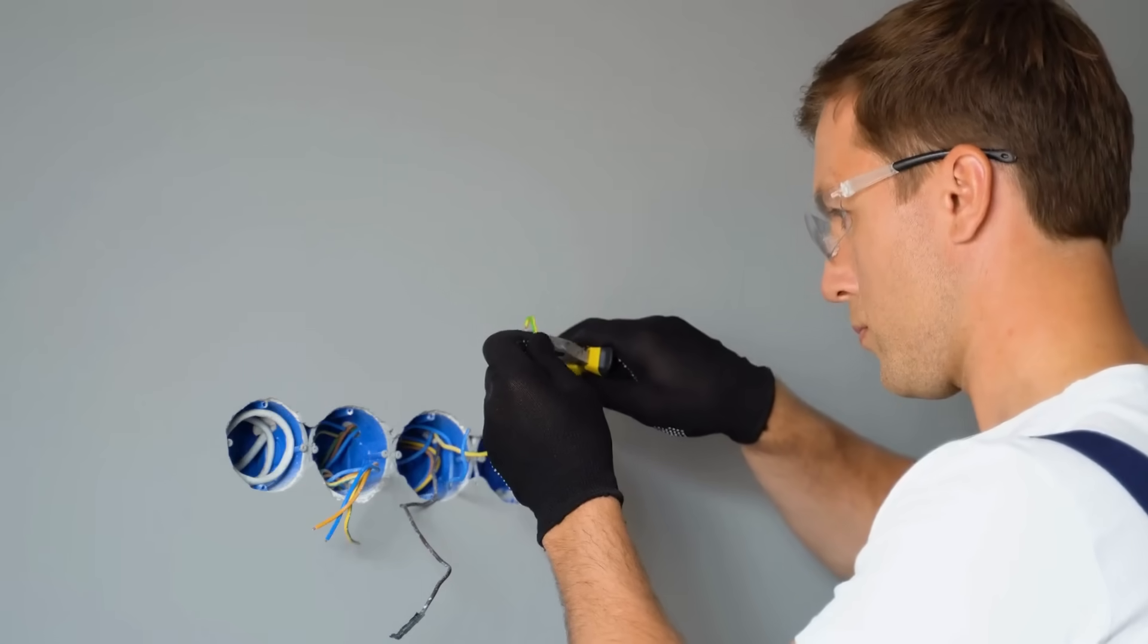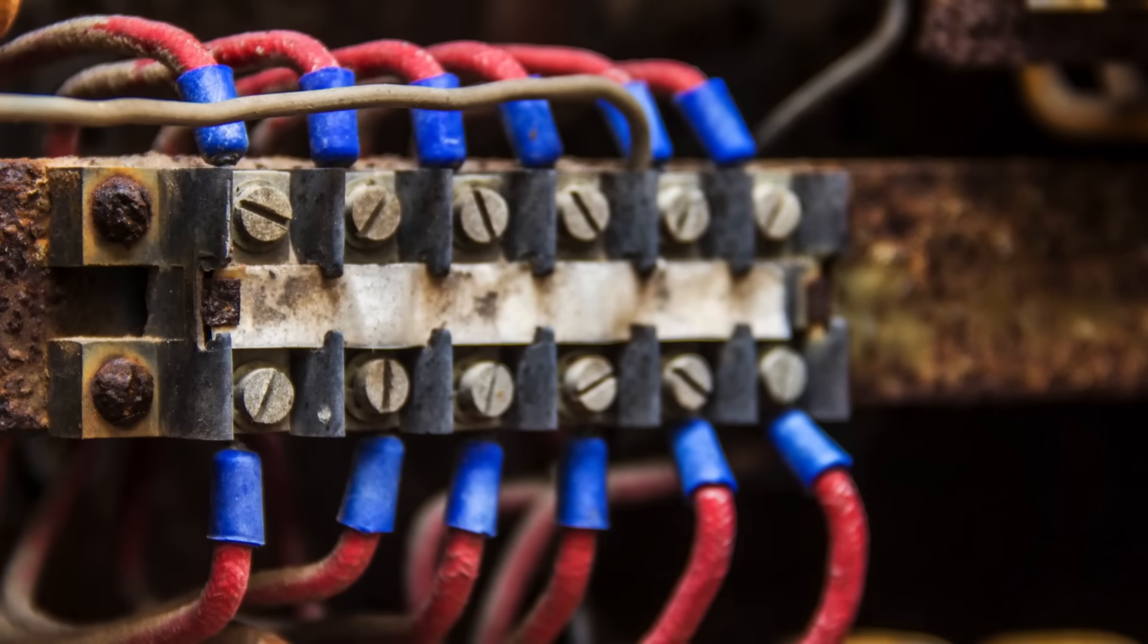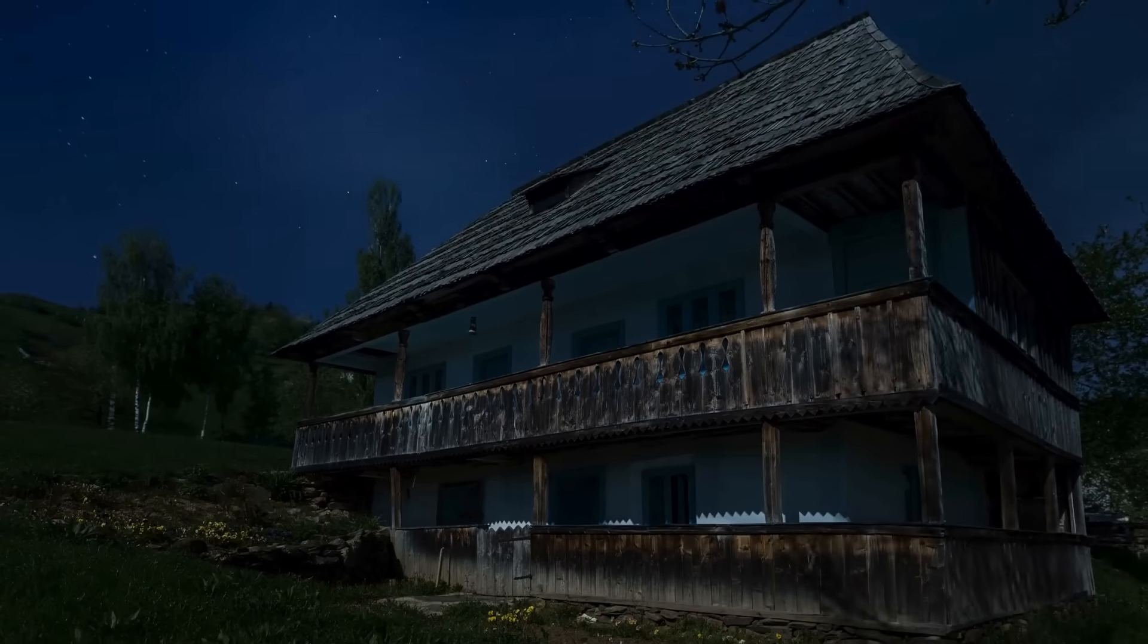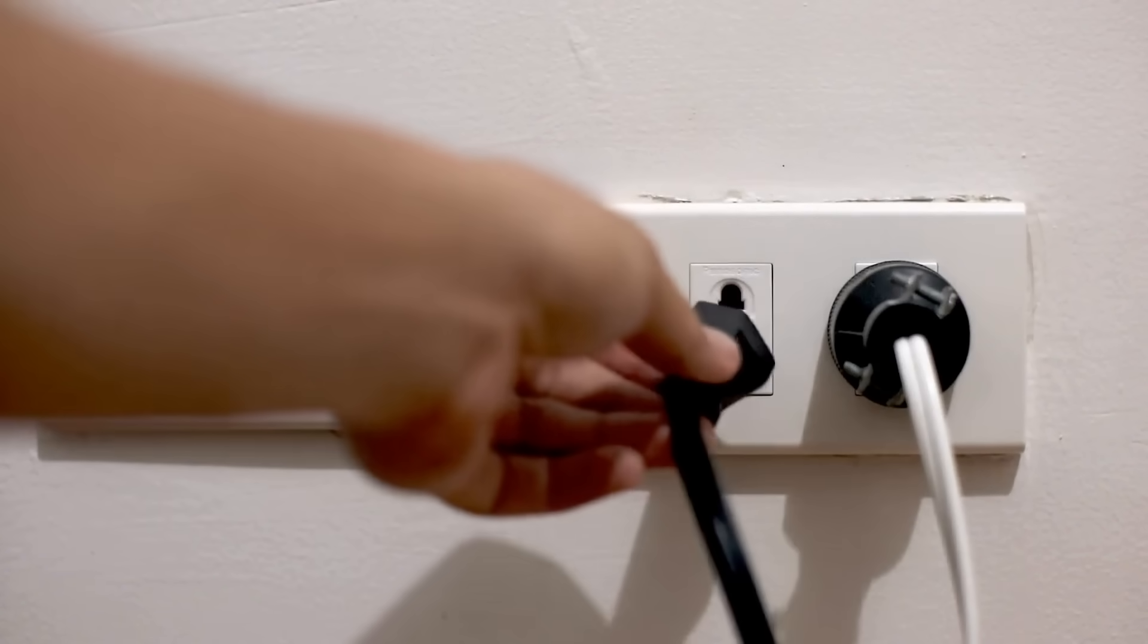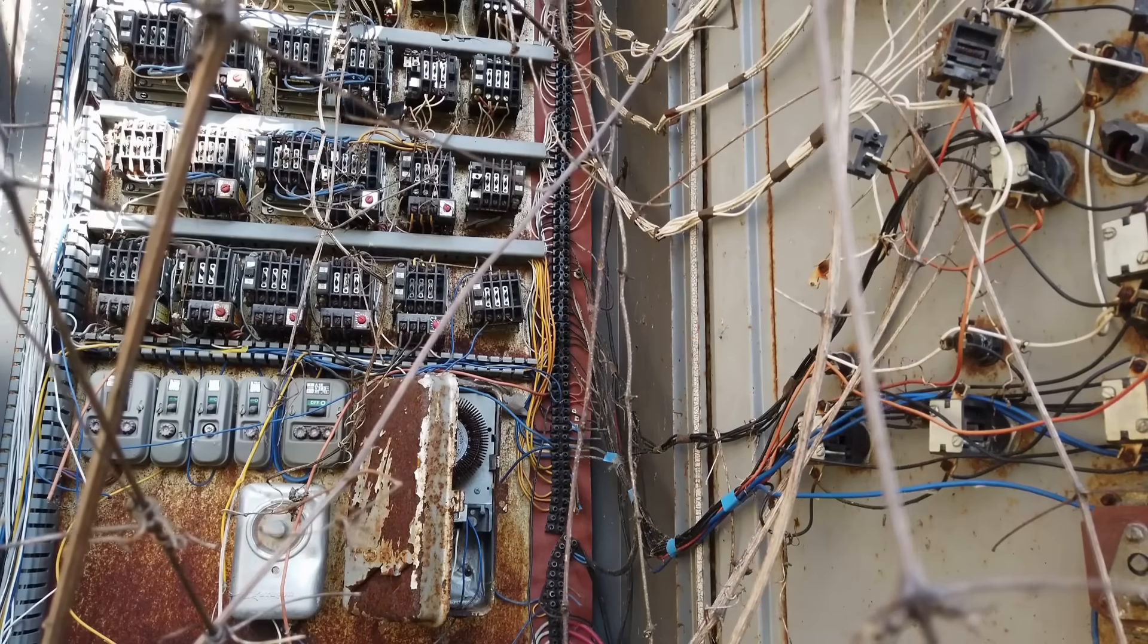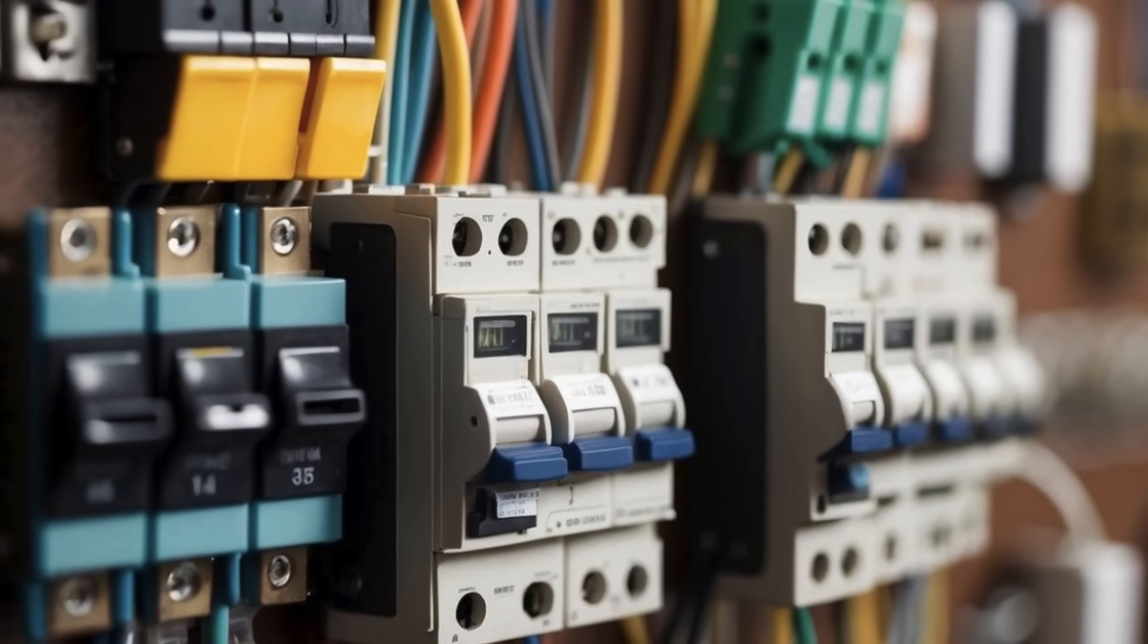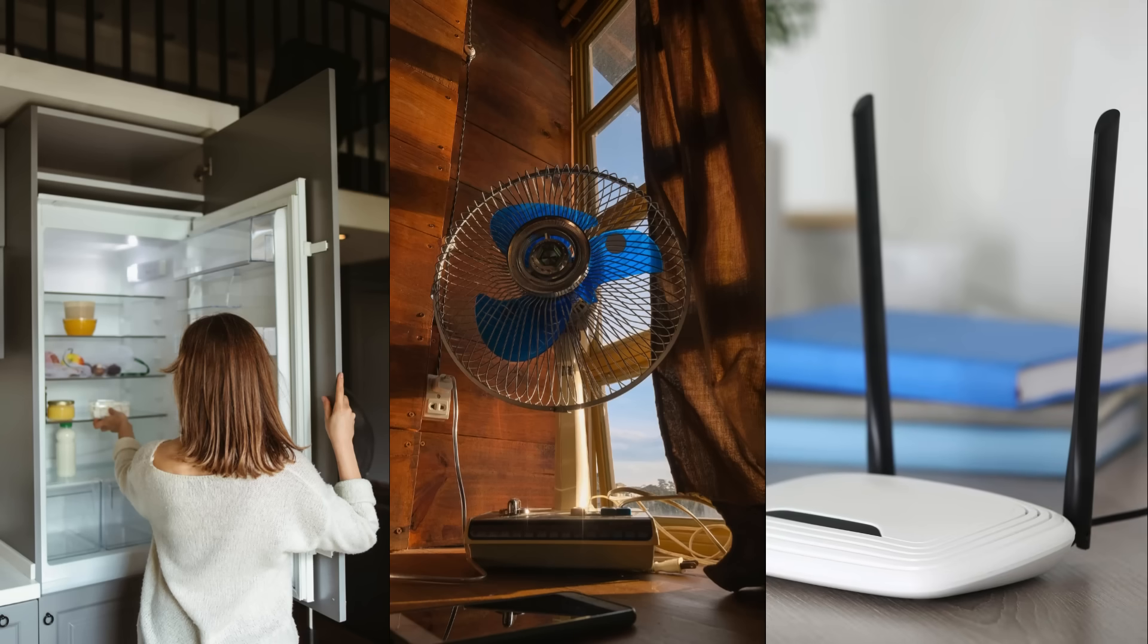Think about the walls around you. Inside them are veins and arteries, not for blood, but for electricity. These wires carry energy from your breaker box to every outlet, switch, and appliance. Without them, your home would be dark, silent, and lifeless. What's fascinating is that wiring often goes unnoticed. We only think about it when something goes wrong, but in reality, wiring is working for us every second of the day. It's what keeps your fridge cold, your fan spinning, and your Wi-Fi router online.